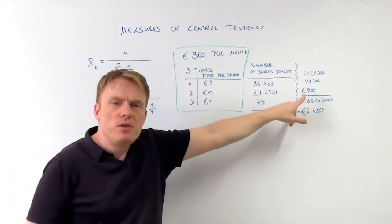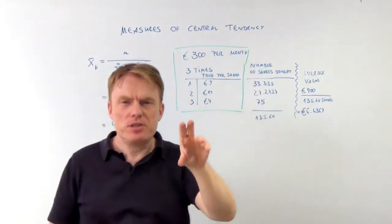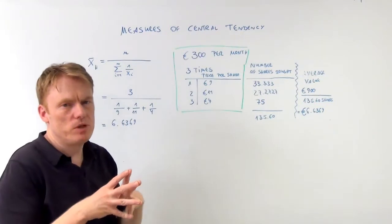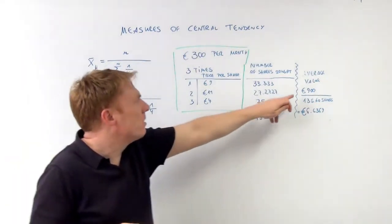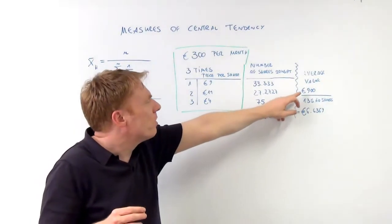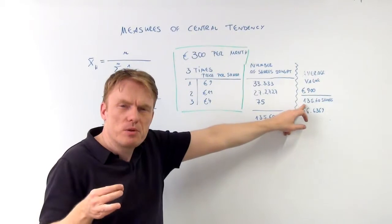So if you pay 900 euros, because you pay three times 300 euros, you have 900 euros spent on 135 shares.